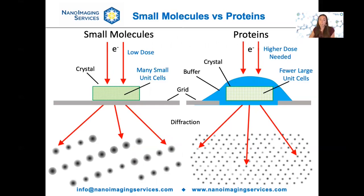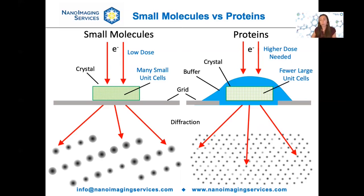This is because small molecules and proteins have drastically different properties that make structure determination for proteins much more challenging. Small molecules, at least the ones we're working with, are supplied as dry crystals, which can easily be placed onto a grid and put in the microscope. Proteins, on the other hand, are grown in aqueous solution, and this buffer needs to be kept around the crystals otherwise they lose their diffracting qualities, adding another layer of complexity when preparing grids. Additionally, small molecule crystals typically diffract at higher resolution than protein crystals and typically have higher intensities, all of which make data processing much easier for small molecules.